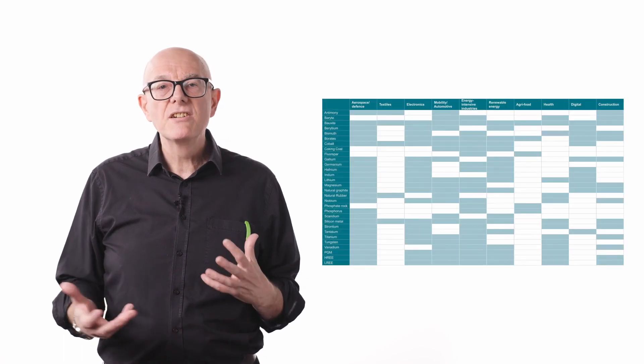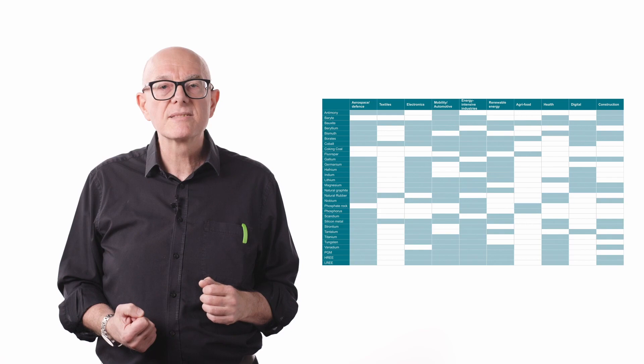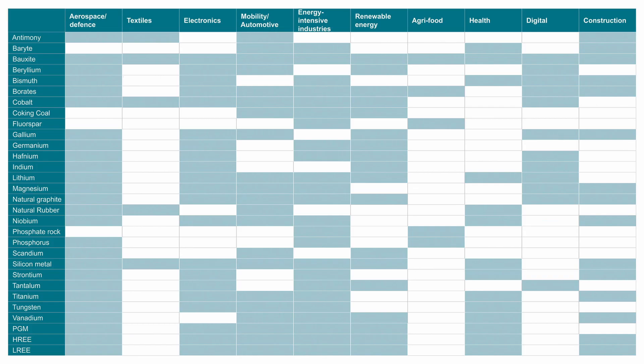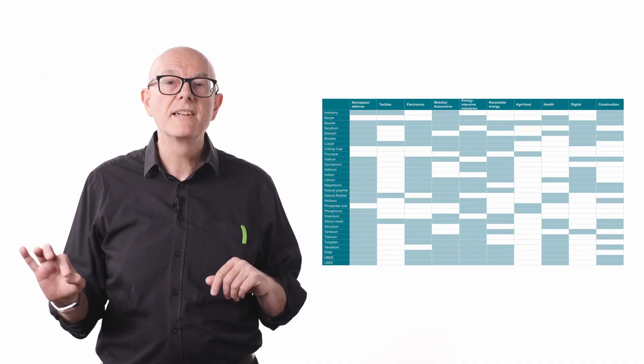This image shows the industrial sectors which use critical materials. Construction is shown at the end column. But if you also consider that buildings contain textiles, electronics, renewable energy and digital, then you see the built environment — especially a circular low carbon built environment — is highly critical material dependent.